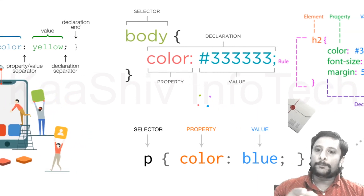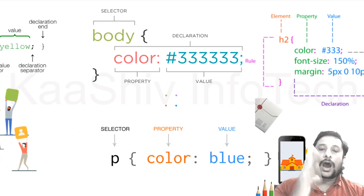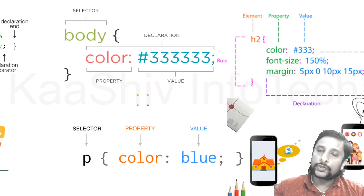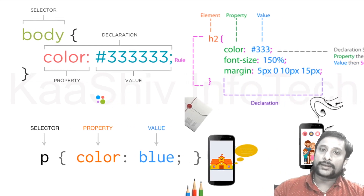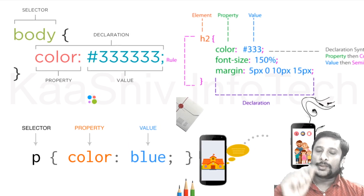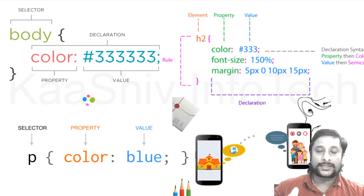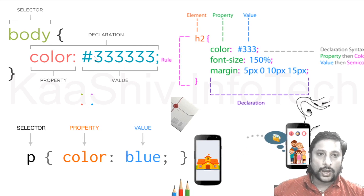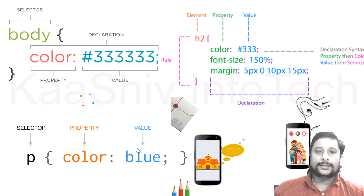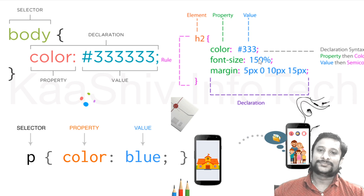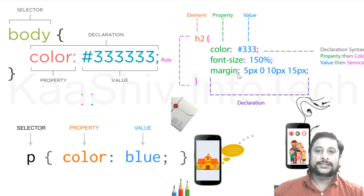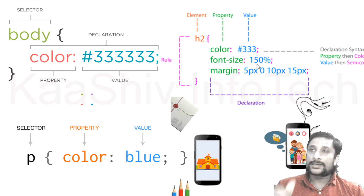Alpha numeric number. Margin is left, right, top, bottom - 5 pixel left, zero. Margin is left left.